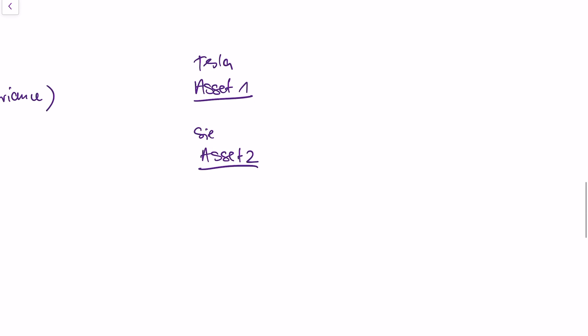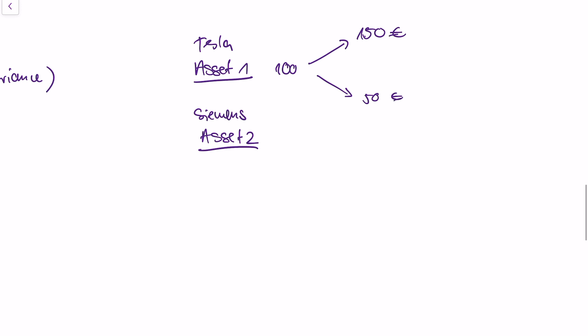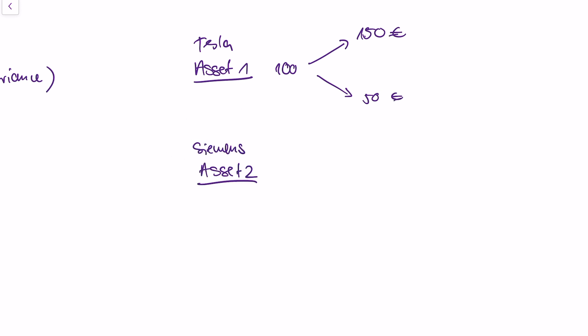Let's say we have two assets: the Tesla share and the Siemens share from the last video. With the Tesla share, if we put in 100 euros today, we have the chance of getting 150 or 50 euros tomorrow. With the Siemens share, if we put in 100 euros today, we have the chance of getting 200 euros or zero euros tomorrow.